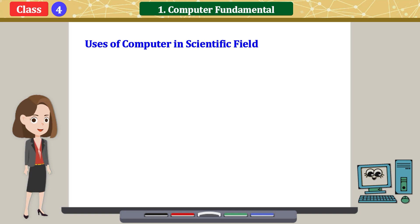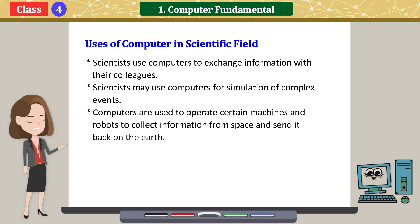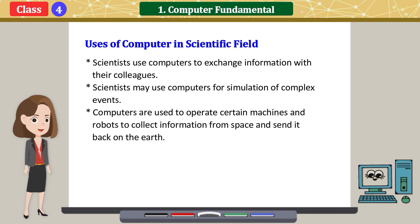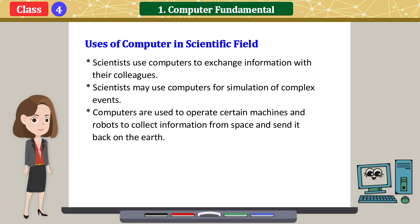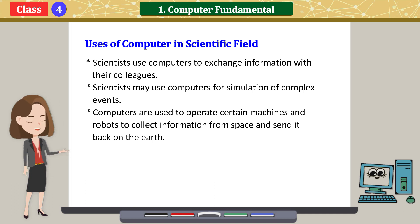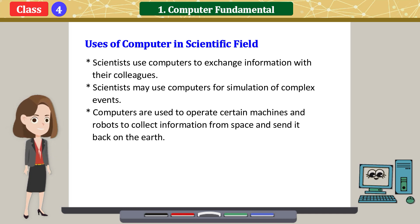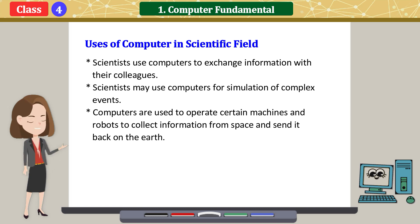Uses of computer in scientific field: scientists use computers to exchange information with their colleagues. Scientists may use computers for simulation of complex events. Computers are used to operate certain machines and robots to collect information from space and send it back on the earth.